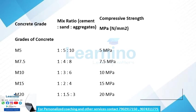For example, the numbers in each grade specify the characteristic compressive strength. M5 has a mix proportion of 1:5:10 and a characteristic compressive strength of 5 N/mm². M7.5 has a mix proportion of 1:4:8 and strength of 7.5 N/mm².